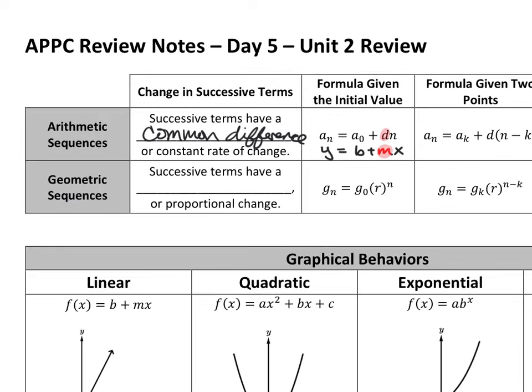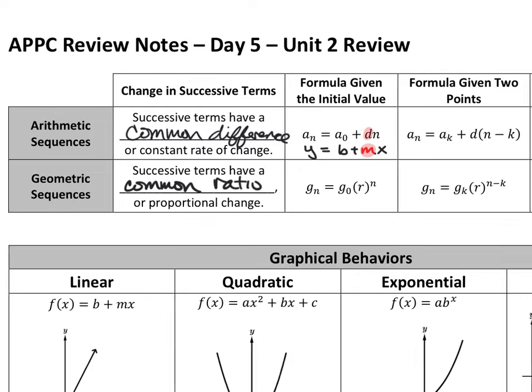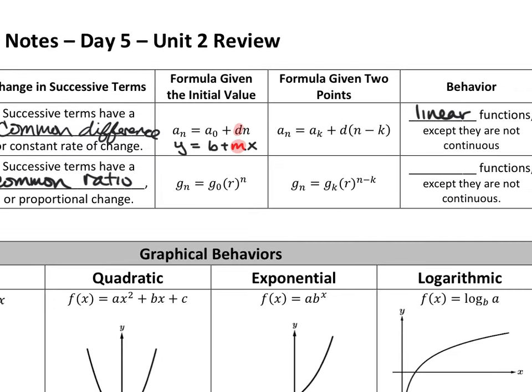The same way we did that with arithmetic, geometric sequences have successive terms with common ratios — a proportional change. These are the ones that multiply by a particular value instead of adding and subtracting. We have their formulas to memorize, whether you're given the initial value g-sub-0, or a point k and g-sub-k. These behave like exponential functions — they're the ones that grow or decay really quickly. They look like y equals a times b to the x power, where r is your common ratio, the factor you're multiplying by every time.